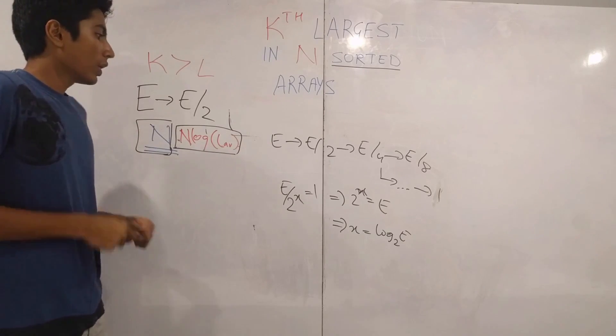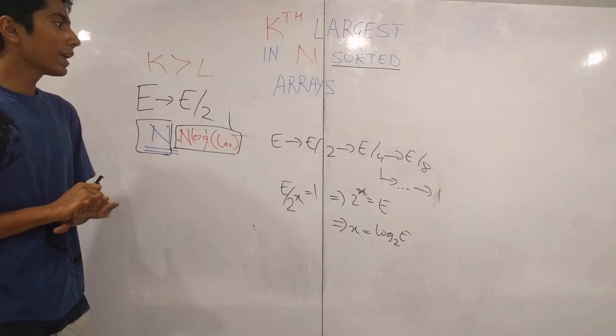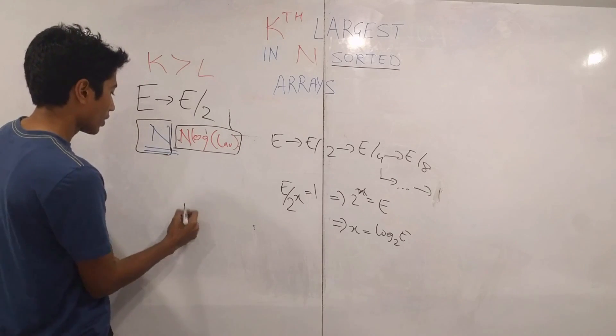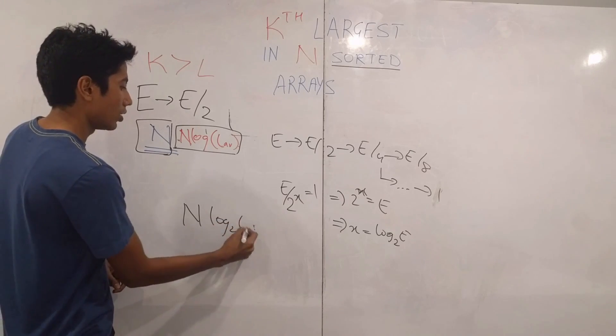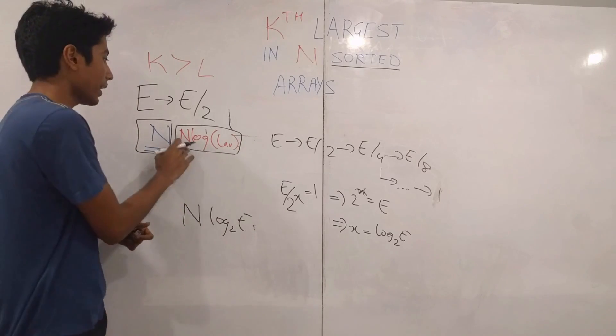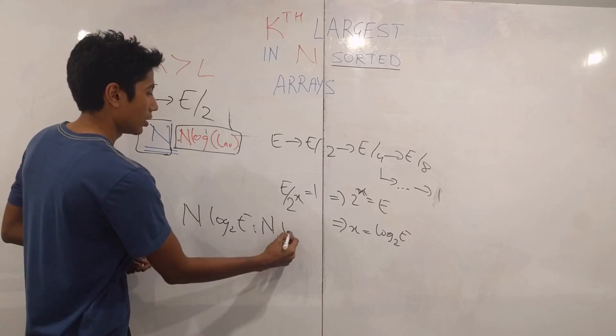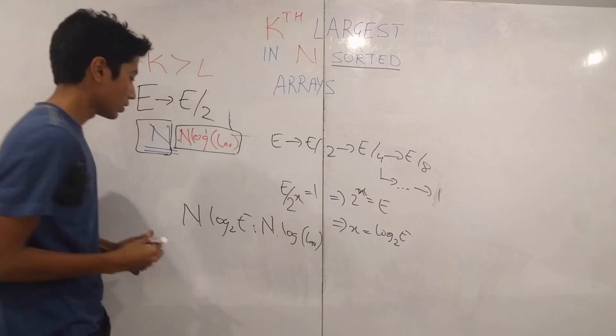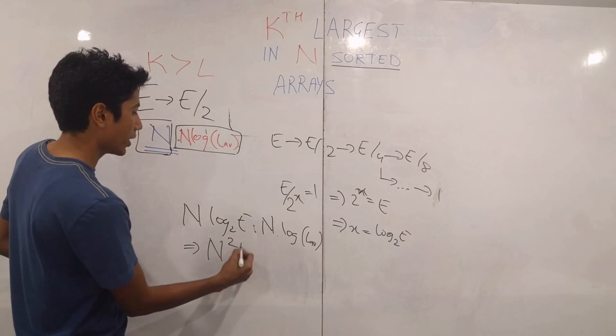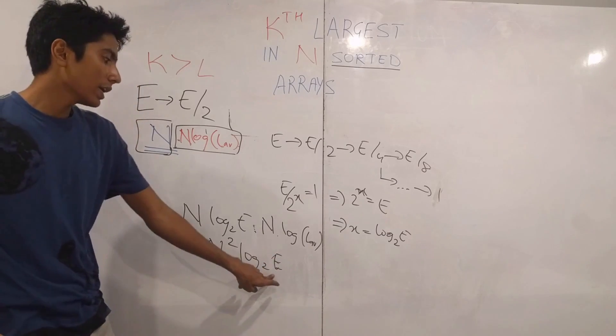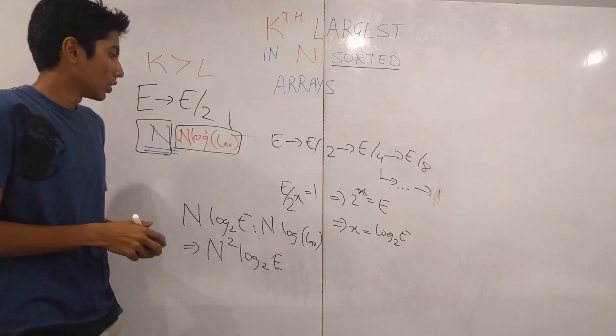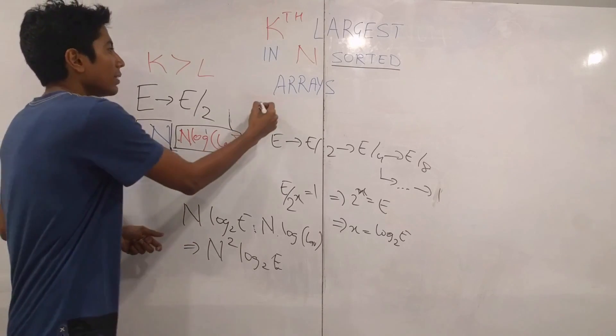That's interesting. So in these many operations, we can get rid of all elements. And each operation is going to cost you n. So n log e to the base two into doing binary searches on n elements. So that is into n into log of l average. So in turn, this becomes n square log 2e. L average is less than, obviously, the sum of the elements. So it will be e by n.